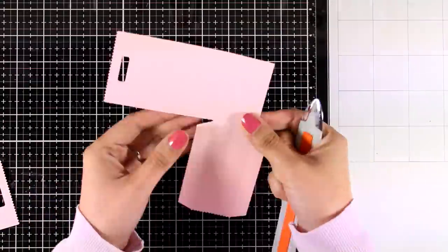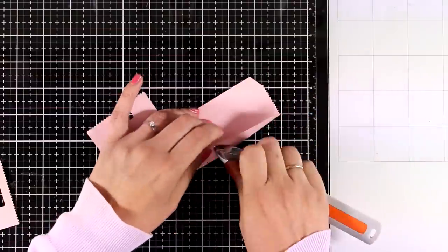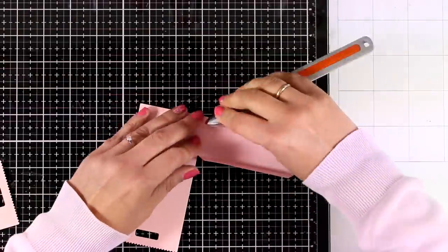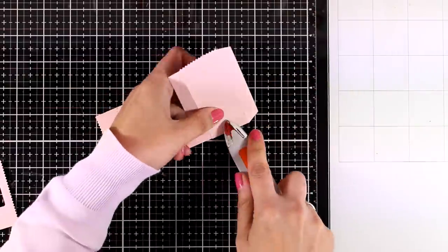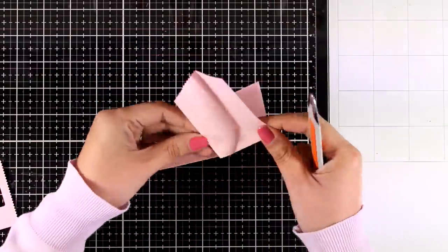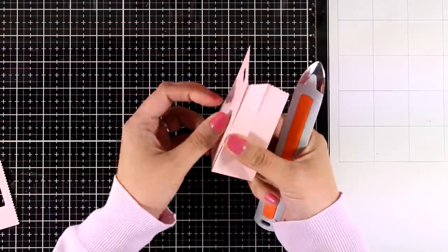So I need to cut out two of those shapes and I will be using my bone folder to reinforce those score lines that you get when you use the die. I will repeat the same process on the other cut out so I will end up with two identical pieces looking like this.